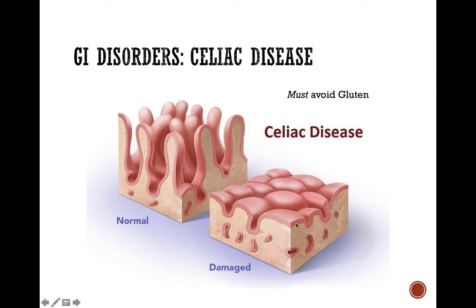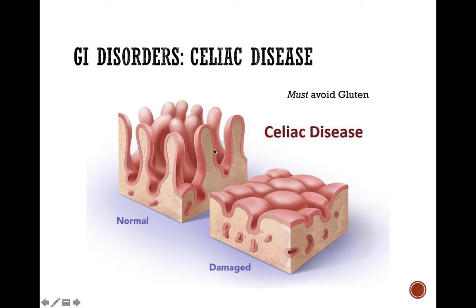Celiac disease involves damaging the microvilli. Here is an example of a normal healthy small intestine with finger-like projections that increase the surface area for absorption. In celiac disease, the person has the inability to break down a protein called gluten, so they must avoid it. When they eat gluten, it destroys the normal microvilli — they become little tiny hills instead of finger-like projections — making it unable to absorb nutrients as efficiently.